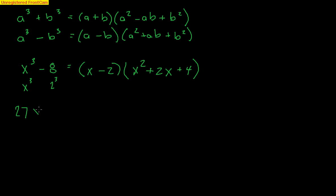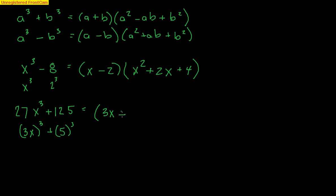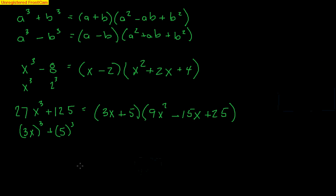Let's try a tougher one: 27x³ + 125. You might not recognize these as cubes, but 27x³ is really (3x)³ — so that's my a value. Three cubed is 27, and x cubed is x cubed. And 125 is 5³, so that's my b value. Using the sum of cubes formula, I get (3x + 5)(9x² minus 15x + 25). Nine x² is (3x)², 15x is 3x times 5, and 25 is 5². Some kids don't like these, but you've got to get used to them.